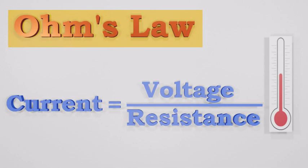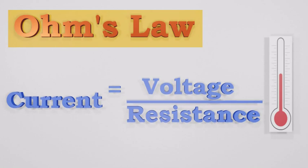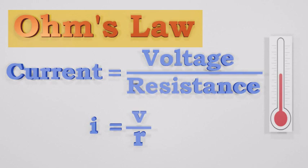This relationship between voltage, current and resistance forms the basis of Ohm's Law. Current equals voltage divided by resistance. Let's replace the terms by the notations: I equals V divided by R.